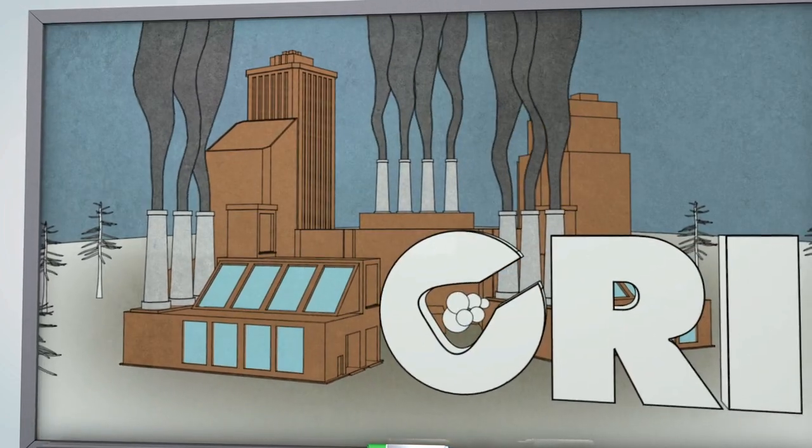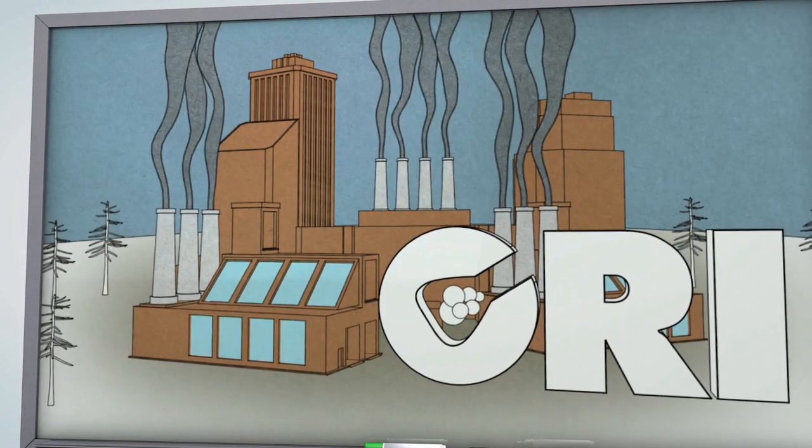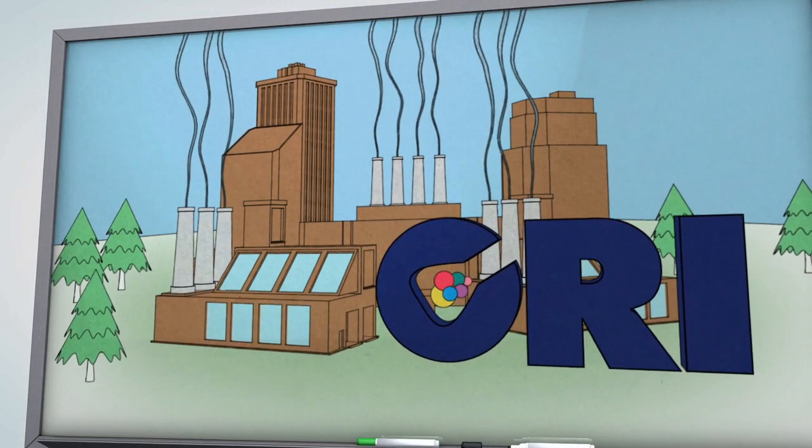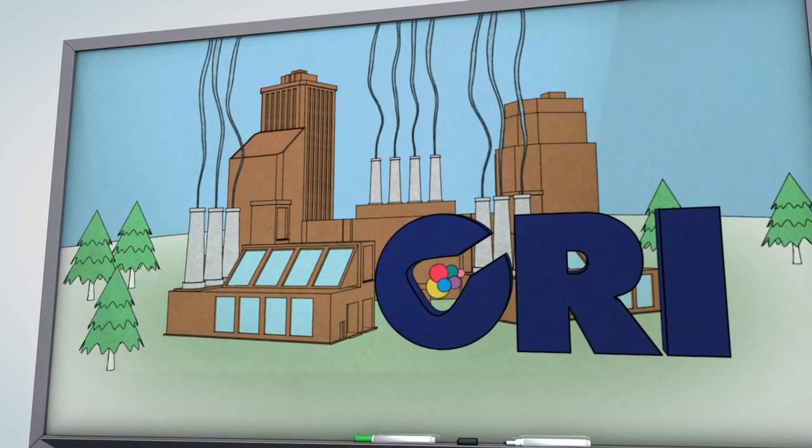That's where CRI comes in. Everyday CRI Catalyst, a subsidiary of Royal Dutch Shell, researches and implements new, innovative ways to help make reducing emissions a reality.